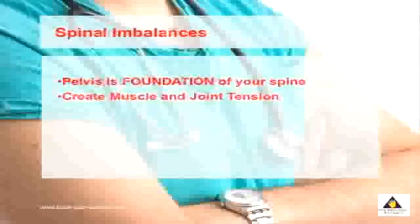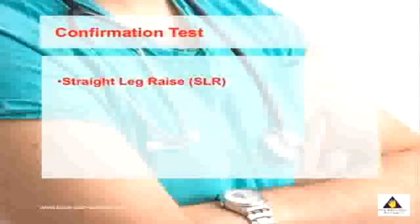A second test that also confirms these imbalances is what's called a straight leg raise. Simply lie on your back with your knees bent, then straighten one leg and raise it as high as you can until you feel a pulling in the back of your leg or in your lower back. Then repeat this for the other side.